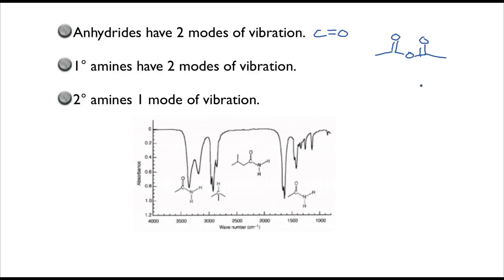In an anhydride, that carbonyl should be blue-shifted — it should go to a higher frequency. Why? Because the carbonyl has a very electronegative oxygen attached to the carbonyl carbon. Because it's electronegative, it's pulling on the electrons in the carbonyl bond, so that bond is shorter, tighter, and vibrates at a higher frequency. That's why anhydrides are blue-shifted and go much higher than 1710–1715 wavenumbers in the IR spectrum. But that's only one way to identify anhydrides.